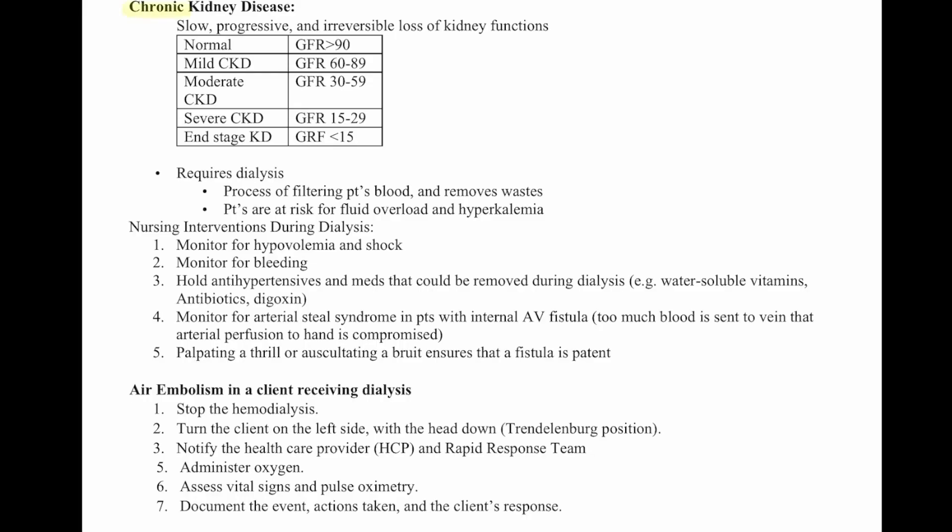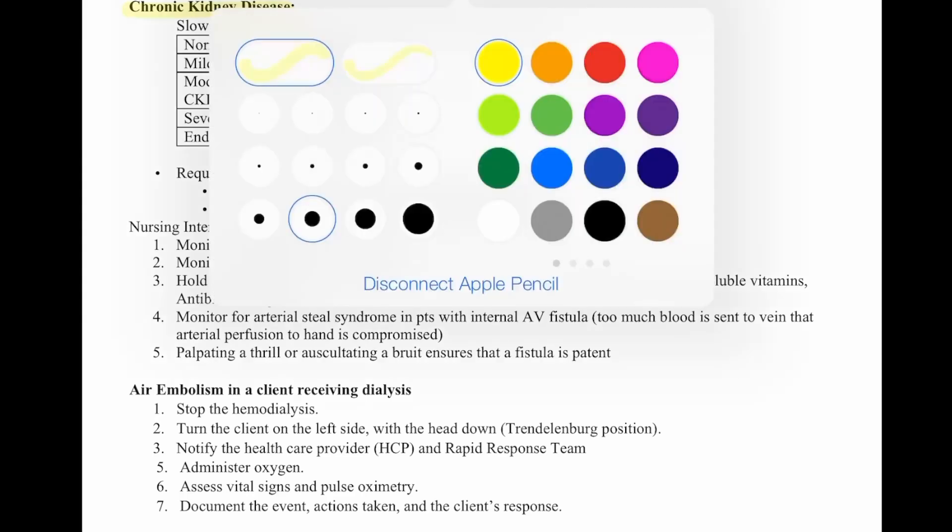Chronic kidney disease is a slow, progressive, and irreversible loss of kidney function. A normal glomerular filtration rate is 90. Mild chronic kidney disease has a GFR between 60 and 89.